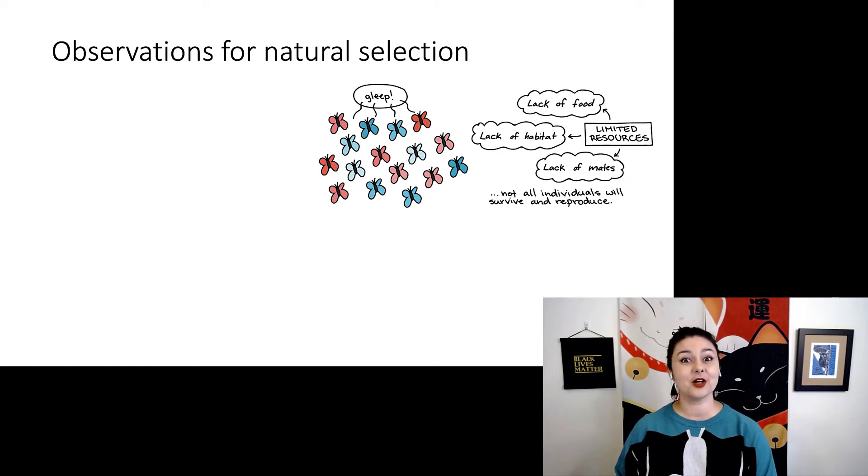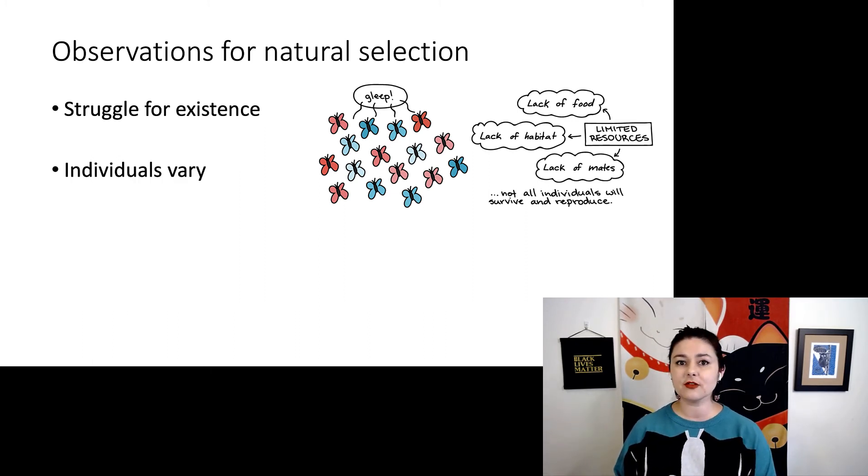Let's now talk about Darwin's last hypothesis, natural selection. This one is a little bit more involved, so we want to talk about a couple observations leading up to natural selection to help us understand what's going on. First, there is this struggle for existence. Remember, we took these words straight from Thomas Malthus. You can think of it as there's competition. There is competition for food, competition for habitat, competition to finding a mate. Also, individuals vary. Not everyone is the same. Pictured here in our butterflies, we have some red morphs and blue morphs, but in each of those morphs, there's several different shades of this color. There's, of course, many different ways we can vary.